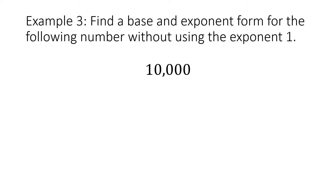Let's look at example 3. Find a base and exponent form for the following number without using the exponent 1. We have 10,000. If you go back and look at the charts, 10,000 is not represented there. But anytime we have a number starting with a 1 followed only by zeros, those numbers are called powers of 10, and they're really easy to represent as exponents. The base is always going to be 10, and to find the exponent you just count the zeros. Here we have four zeros, so 10 to the fourth power equals 10,000. The base is 10 and the exponent is 4.